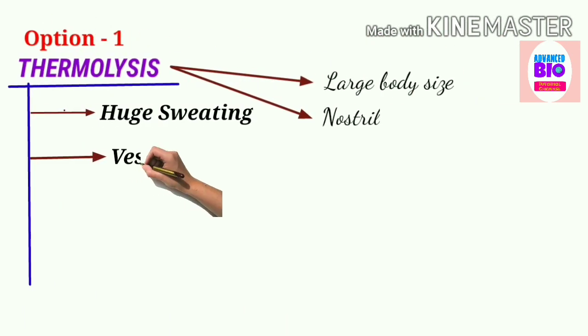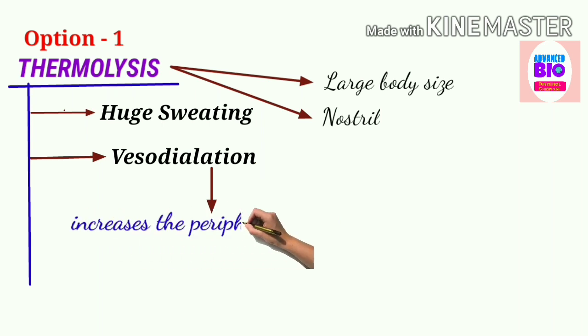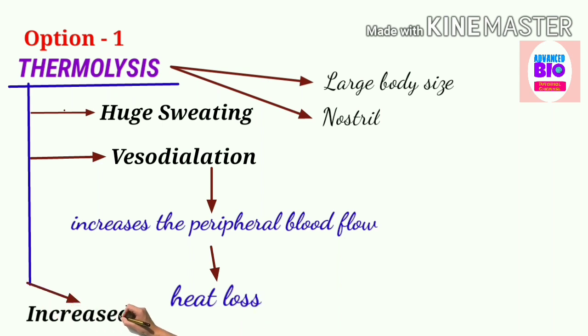Now come to the second point of thermolysis—that is the vasodilation. This increases the peripheral blood flow, resulting in heat loss. Now I am coming to the third point of the process of thermolysis—that is the increased cardiac output. We know cardiac output is the volume of blood pumped by the heart in a minute.